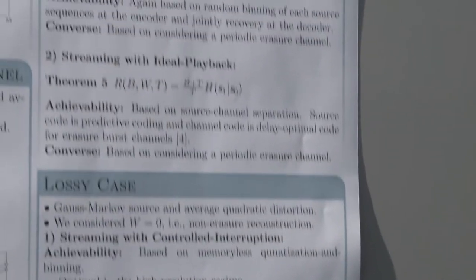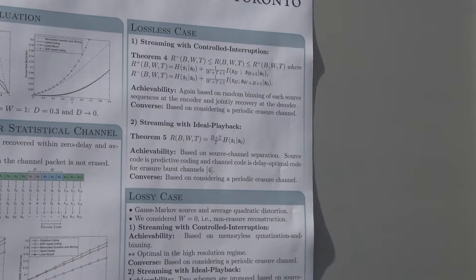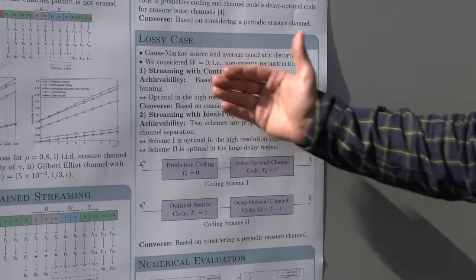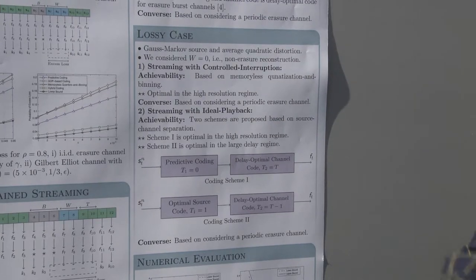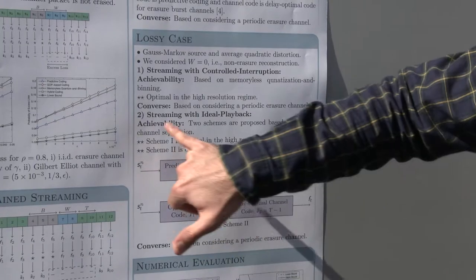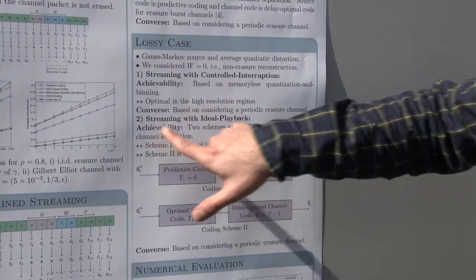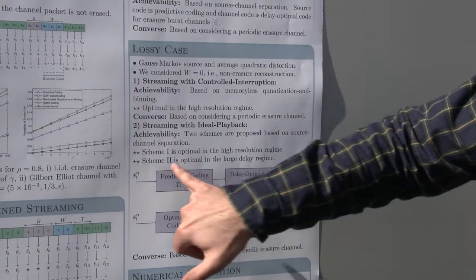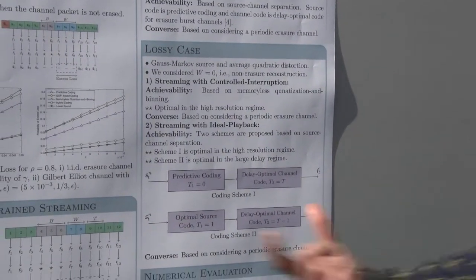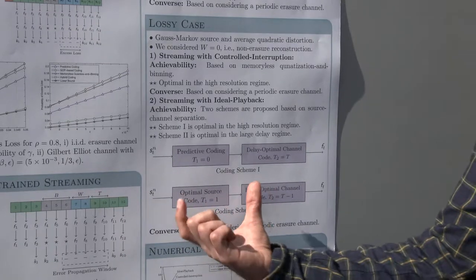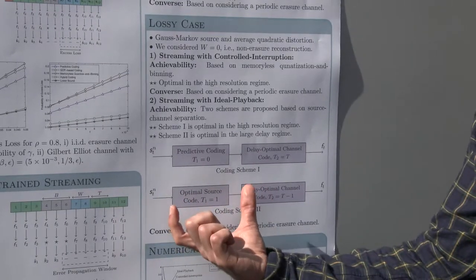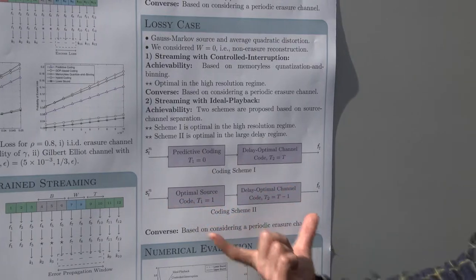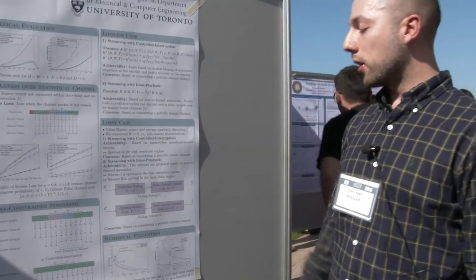For the lossy case, we again concentrate on the case of Gauss-Markov source and average distortion D at the decoder. We first consider streaming with controlled disruption, and for that we have a quantization and binning-based scheme that attains the optimal performance in high resolution. And also for streaming with ideal playback, we have the actual result based on two different coding schemes. Coding scheme one is optimal in high resolution regime, and coding scheme two is in fact optimal in large delay regime. What's interesting in this coding scheme two is that we can attain the optimal source code performance with only a look ahead of T equal one. And that allows a budget of T minus one for the delay optimal channel code, and overall delay of T will attain the optimal performance in large delay regime.